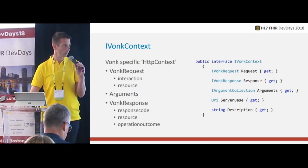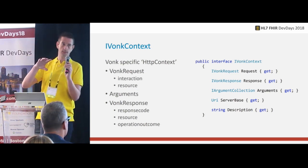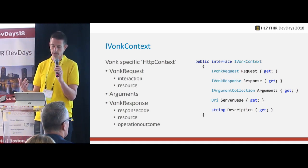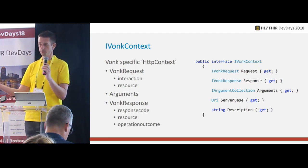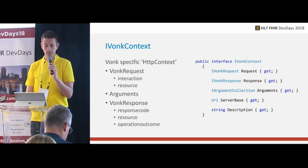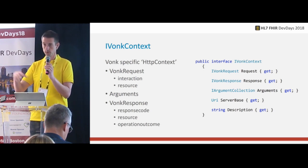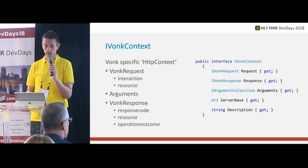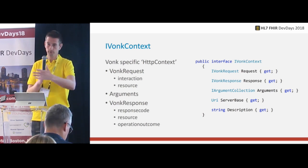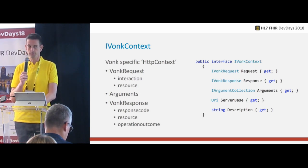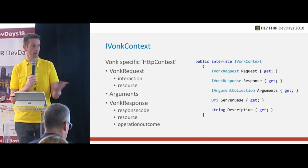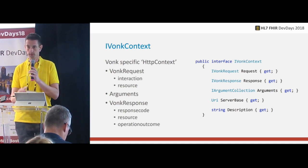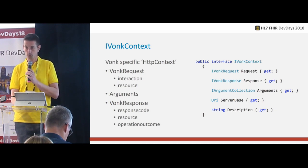We'll start with the iVonc context, which is the counterpart to the HTTP context. It has the request, tells you what interaction it is — read, search, etc. — and maybe there was a resource involved if there was a POST, PUT, or even a transaction. It has arguments: if you do a search, it will have all those arguments; if you do a read, it will contain the ID arguments; if you do a conditional update, it will have the conditions. And a Vonk response that has a response code, a resource to return, and an operation outcome if something was wrong.